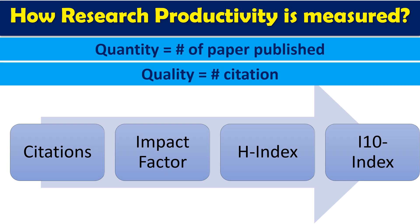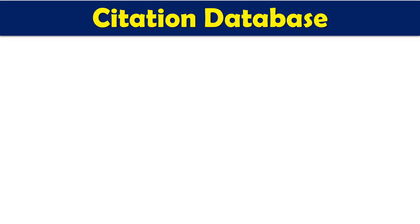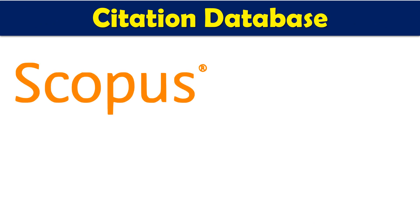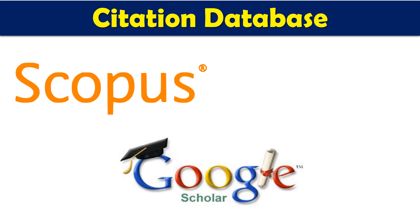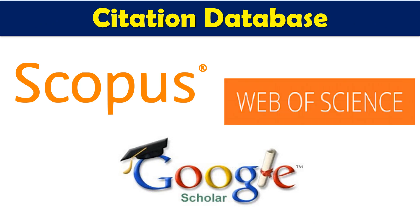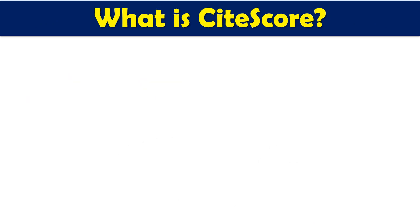There are different metrics available: citations, impact factor, H-index, and i10 index. I have already made videos on impact factor, H-index, and i10 index. Today we are going to talk about citations, and specifically about CiteScore. First, we should understand the different citation databases. There are three main citation databases: Scopus (also called ScienceDirect Scopus), Google Scholar, and Web of Science.